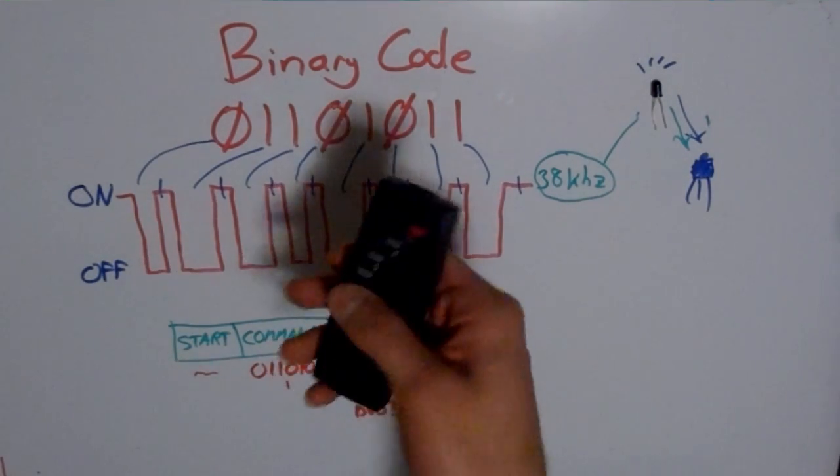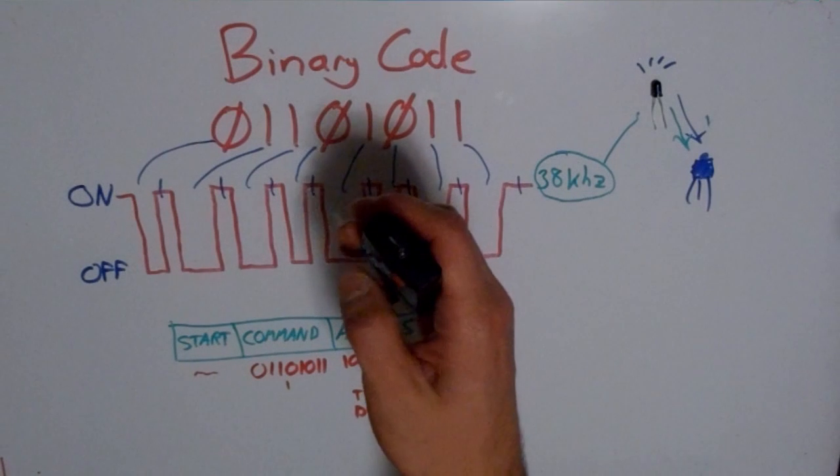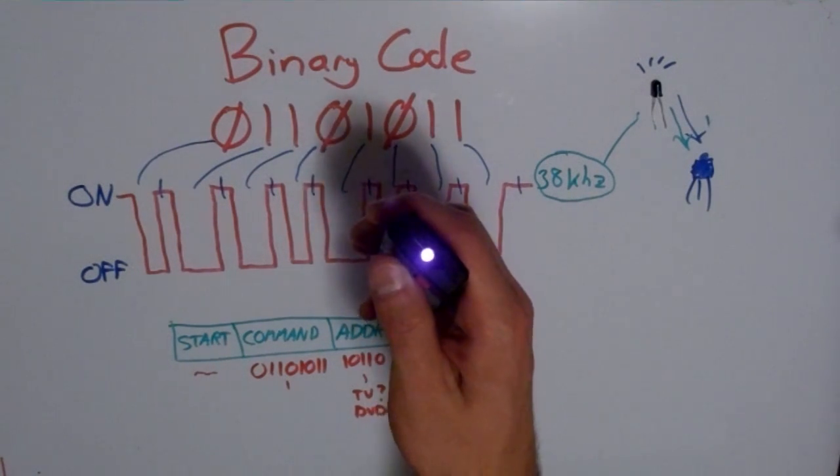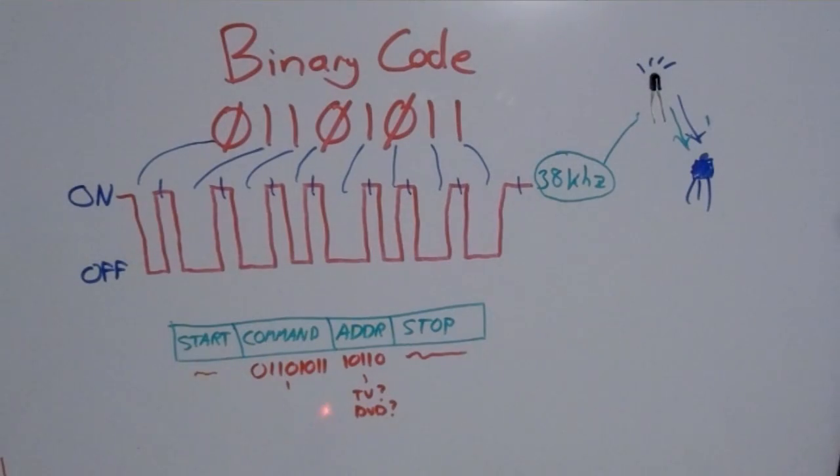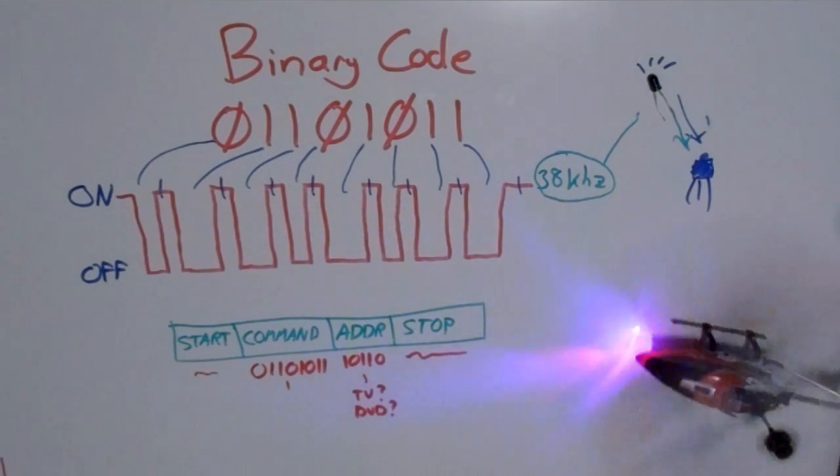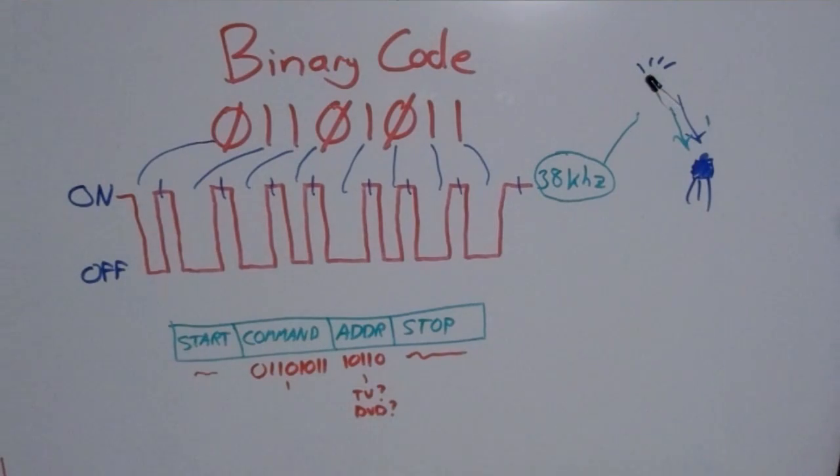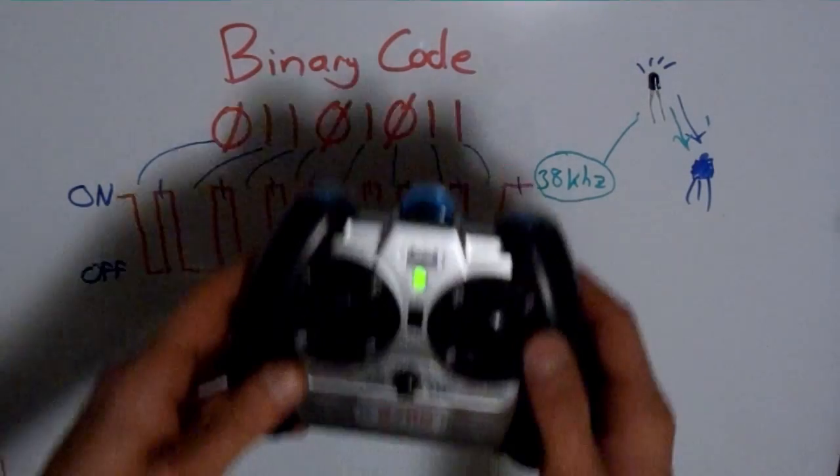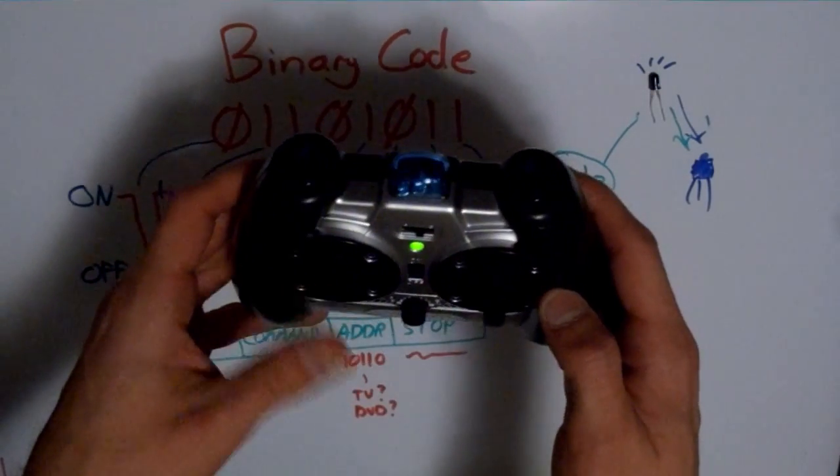So the next time you go use one of your remote controls, stop to think about how much is actually happening when you press that button. Infrared communication isn't only good for your TV. You can do more interesting things with it too. You can see the helicopter remote uses infrared codes just like the TV remote.